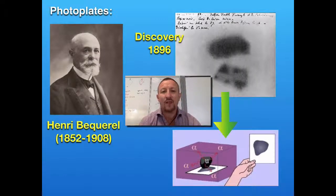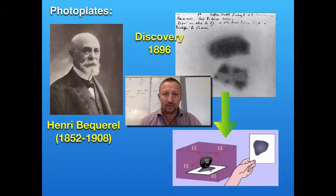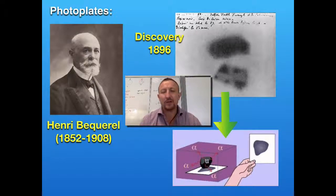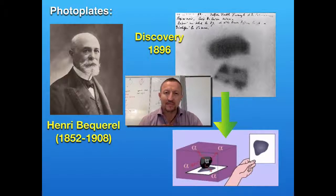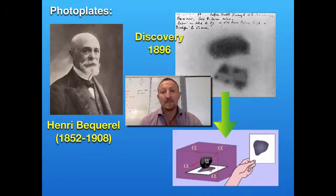The first discovery came in 1896 with Henri Becquerel. He was studying the rock bait which ended up being uranium. What he was doing was taking the uranium and a photo plate — a normal photographic glass plate which he was wrapping in paper — and he was placing the rock on top of the paper and placing that whole apparatus in the sunlight.